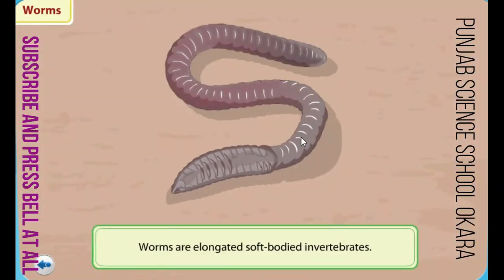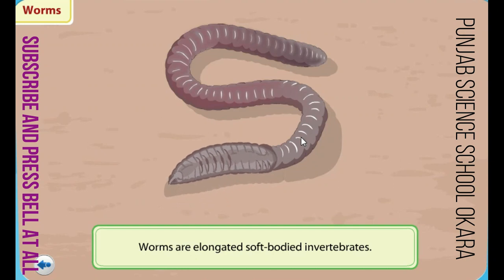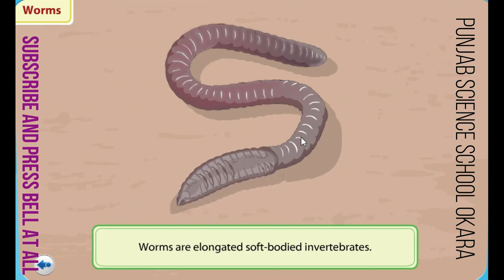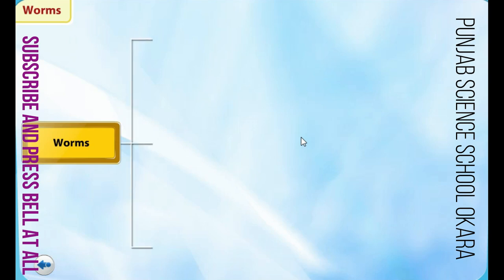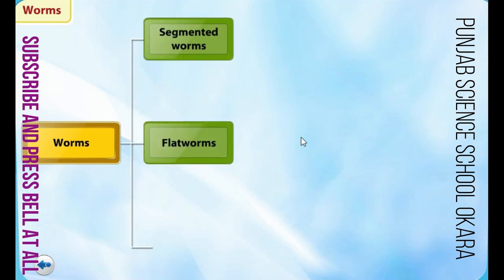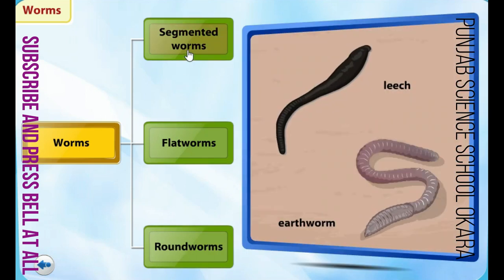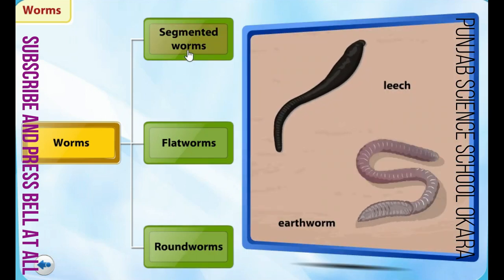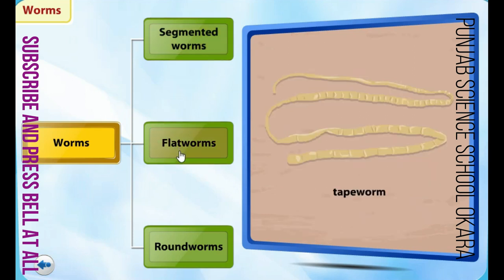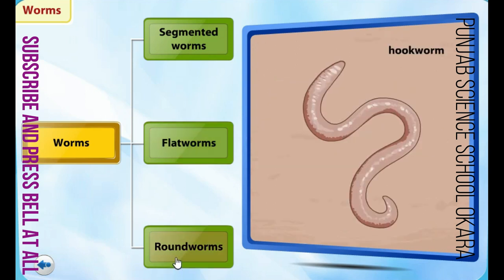Worms are elongated soft-bodied invertebrates. Worms are classified into three groups: segmented worms, flat worms, and round worms. Leeches and earthworms are examples of segmented worms. Tapeworm is an example of a flat worm. Hookworm is an example of a round worm.